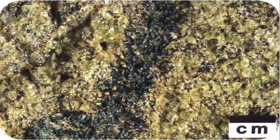Beneath the crust is the mantle. The mantle is made of hot solid rock. They know this because of seismic waves, meteorites, and the heat that comes from inside the planet. Mantle rock is mostly peridotite, which is rich in iron and magnesium.